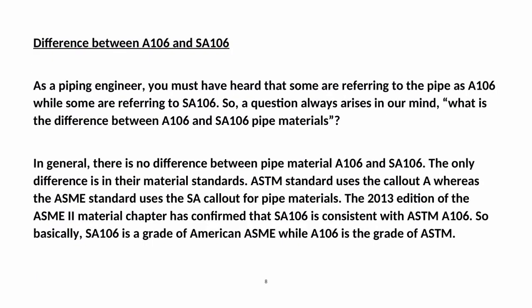As a piping engineer, you may have heard pipes referred to as either A-106 or SA-106. In general, there is no difference between the two. The only difference is in their material standards: ASTM standard uses the 'A' call-out while ASME standard uses the 'SA' call-out. The 2013 edition of ASME Section II material chapter confirmed that SA-106 is consistent with ASTM A-106. Basically, SA-106 is the ASME grade while A-106 is the ASTM grade.